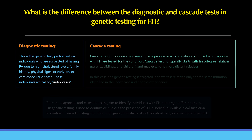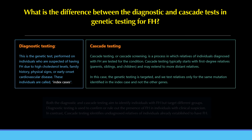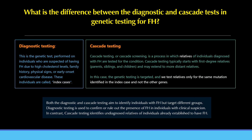Cascade testing, or cascade screening, is a process in which relatives of individuals diagnosed with FH are tested for the condition. It typically starts with first-degree relatives — parents, siblings, and children — and may extend to more distant relatives. In cascade testing, relatives are tested only for the same mutation identified in the index case, not all other genes. Both types aim to identify individuals with FH but target different groups: diagnostic testing confirms or rules out FH in those with clinical suspicion, while cascade testing identifies undiagnosed relatives of those already established to have FH.